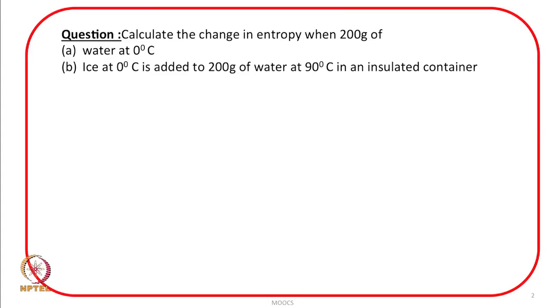Let us first take up this question: calculate the change in entropy when 200 gram of water at 0 degree Celsius, and in the second experiment ice at 0 degree Celsius, is added to 200 gram of water at 90 degree Celsius in an insulated container.